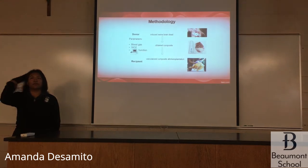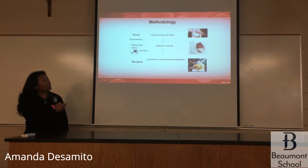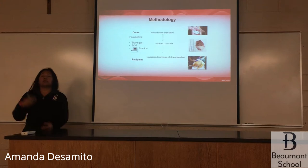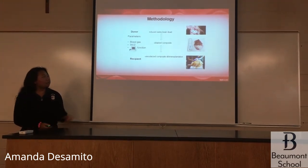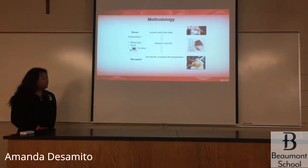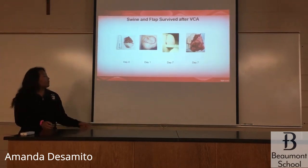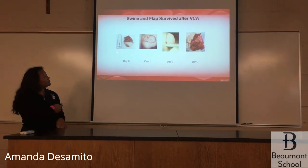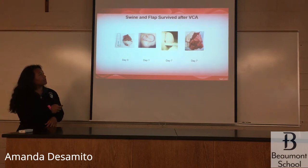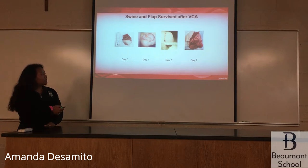The methodology for a VCA: first, they induce swine brain death by increasing the intracranial pressure in the head. Once the donor is deemed brain dead, they obtain a composite, which you can see in the second picture, and then transplant it over to the recipient. This is a picture of the before and after of a VCA. When the graft is obtained, it looks like this, and then as it progresses after transplant, it swells a little bit. On day seven, it was taken out to be examined.